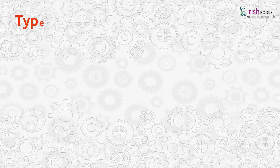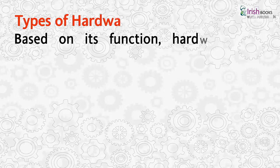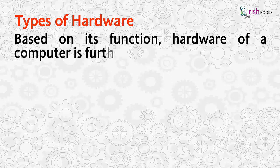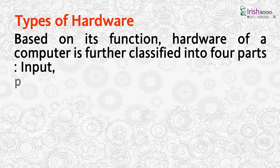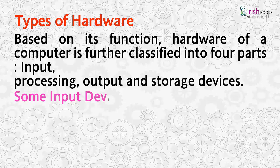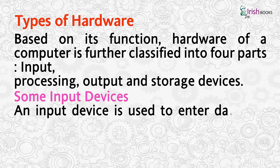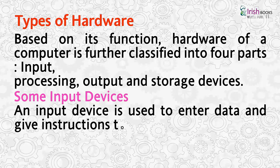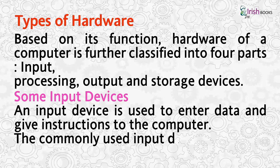Types of Hardware. Based on its function, hardware of a computer is further classified into four parts: input, processing, output, and storage devices. An input device is used to enter data and give instructions to the computer. The commonly used input devices are: